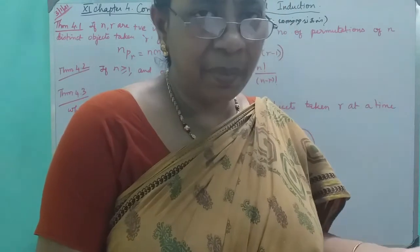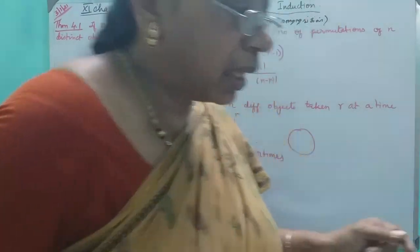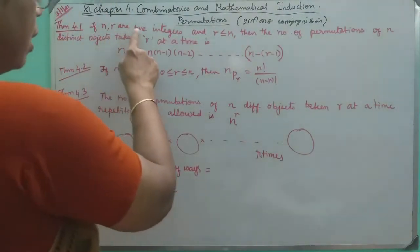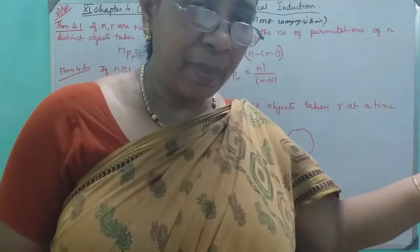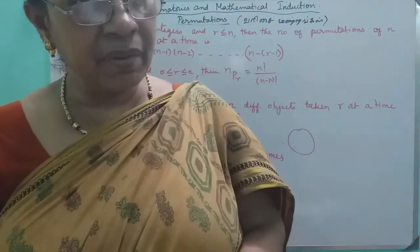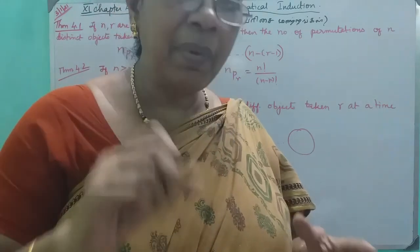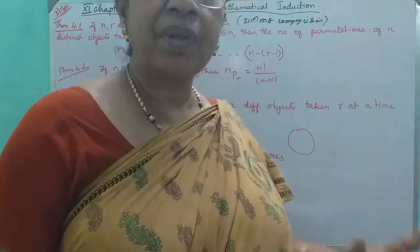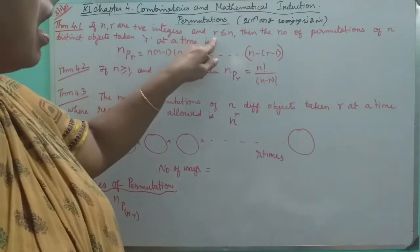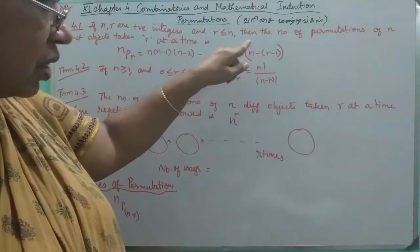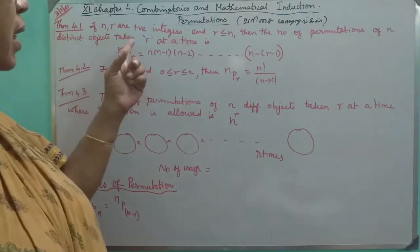This is theorem 4.1. If n, r are positive integers, and r is less than or equal to n, the number of permutations of n distinct objects taken r at a time.